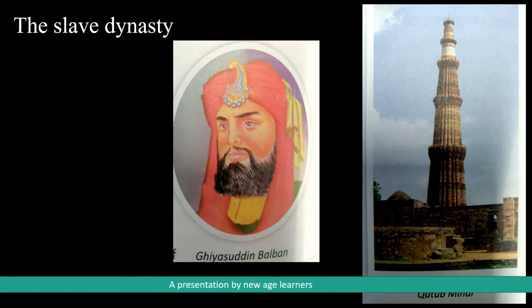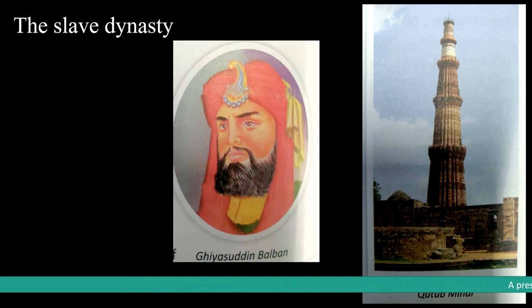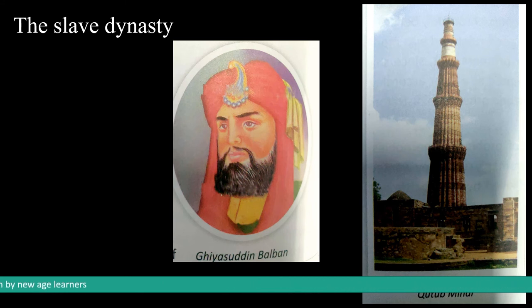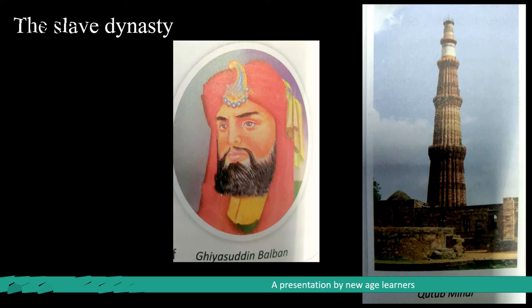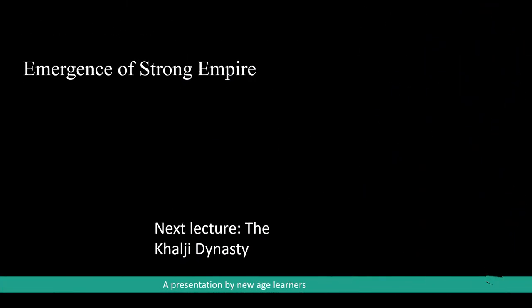Balban introduced the Persian custom of Sijdah (prostration) or Zaminbos (kissing the ground). According to common people, such customs were reserved for God alone, and therefore they considered it un-Islamic. The successors of Balban were weak and could not hold onto power. This allowed the Khalji tribe to kill the last ruler of the slave dynasty and establish their own rule.